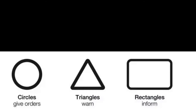The second shape is the triangle, which gives you warnings. So triangles are for warnings. The third shape is rectangles, and rectangles give you information and instructions. We will see examples of that in the next picture.